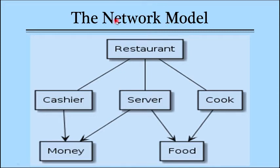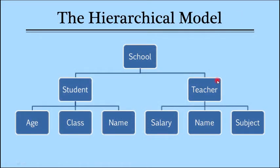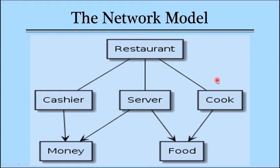The main advantage of the network model is that it replies to queries very quickly. If your database model is a network model, all your queries will be replied to very quickly. There is a disadvantage due to its complexity. So the three models we have learnt are: relational data model, hierarchical model, and network model.